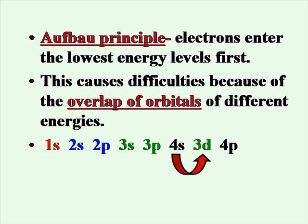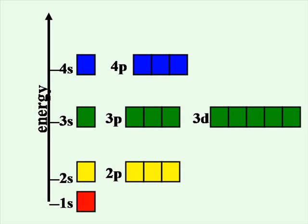The Aufbau principle states that electrons enter the lowest energy levels first. This can cause some difficulties because of the overlap of orbitals of different energies. We would expect electrons to enter the 1S, then the 2S, 2P, 3S, 3P, 3D, and so on. But in fact, because of electron repulsions, they don't choose to do that.